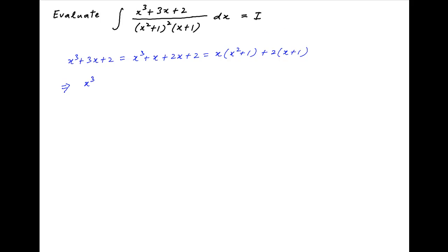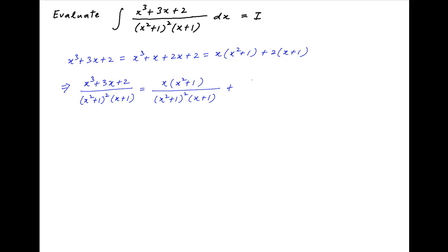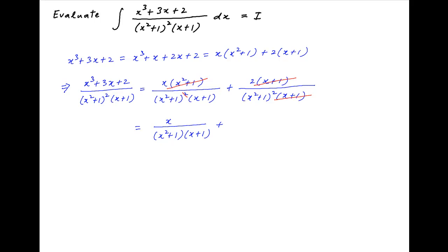Therefore the integrand can be written as x times (x squared plus 1) divided by (x squared plus 1) squared times (x plus 1), plus 2 times (x plus 1) divided by (x squared plus 1) squared times (x plus 1). Both terms simplify and the integrand equals x over [(x squared plus 1)(x plus 1)] plus 2 over (x squared plus 1) squared.